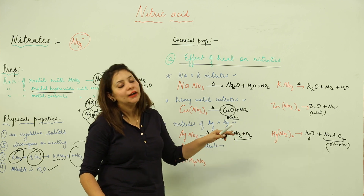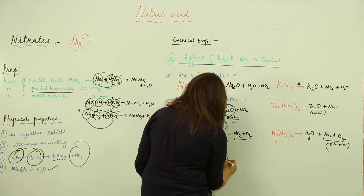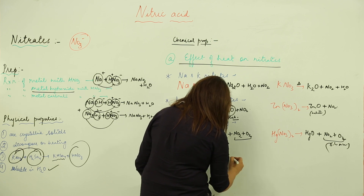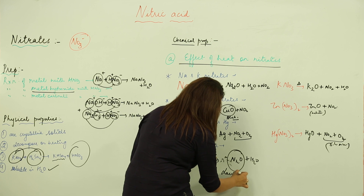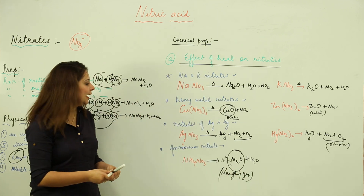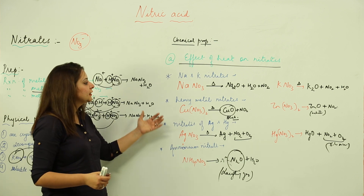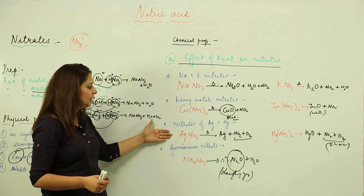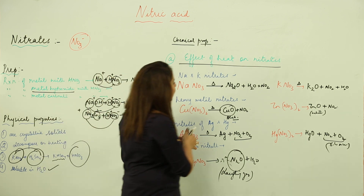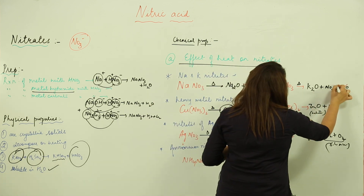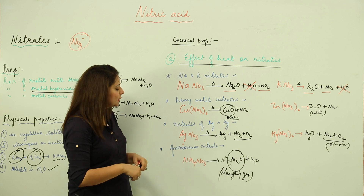Decomposing ammonium nitrate on heating gives N2O plus water. N2O is nitrous oxide, commonly known as laughing gas. To summarize: sodium and potassium nitrates behave one way; heavy metal nitrates another way; silver and mercury nitrates differently again; and ammonium nitrate produces laughing gas. For sodium nitrate, we get only the metal oxide and NO2, with no H2O.